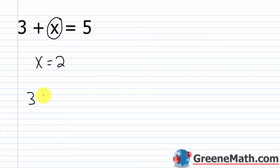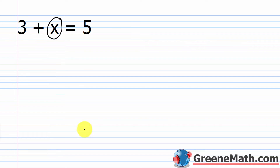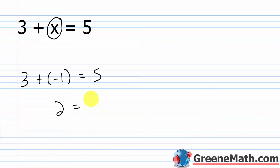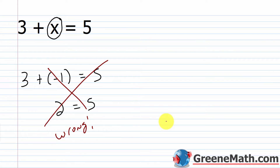Just plug in for the x: 3 plus 2 is equal to 5. The left side becomes 5, and that equals 5 — same value on the left and the right side. If I would choose any other number, I'd get a false statement. For example, if x equals negative 1, I'd have 3 plus negative 1 equals 5, which gives 2 equals 5 — that's wrong. The only value for x that works is 2, because 3 plus 2 gives us 5.